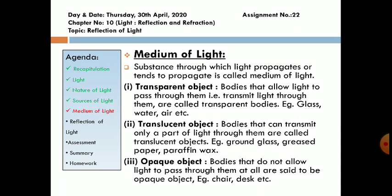Translucent objects. Bodies that can transmit only a part of light through them are called translucent objects. Example: grounded glass, greased or buttered paper, paraffin wax.